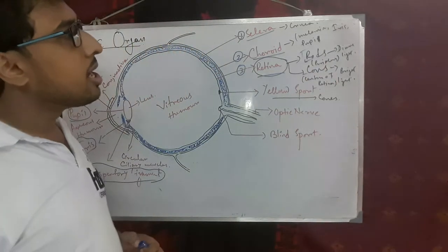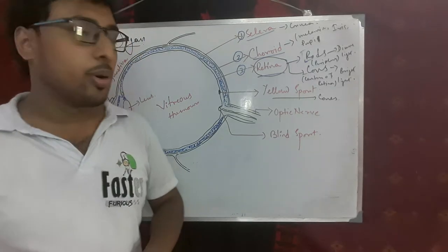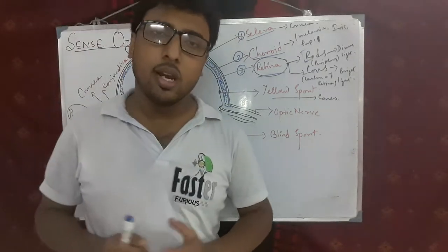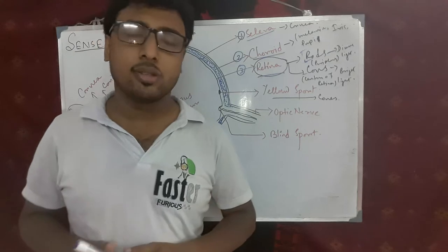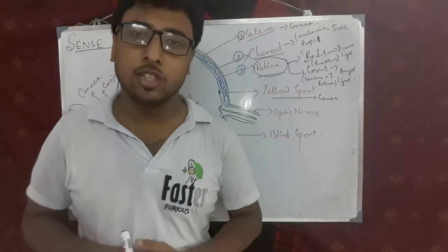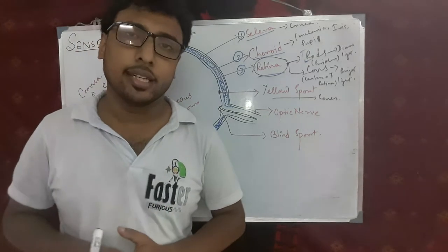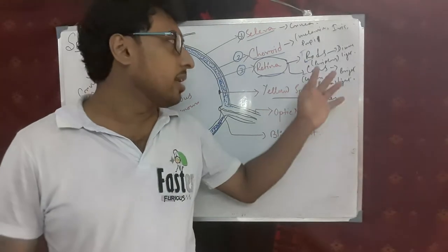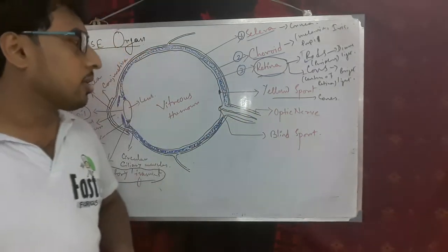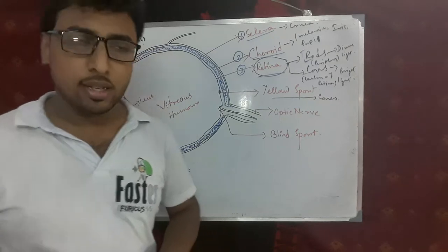Rod cells are located in the peripheral region of the retina, while cone cells are located in the center of the retina. The differences: within rod cells, rhodopsin pigment is present; within cone cells, iodopsin pigment is present. Rod cells are responsible for dim-light vision, and cone cells are responsible for bright-light vision. These are important differences between rod cells and cone cells.